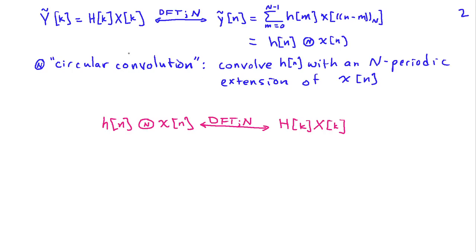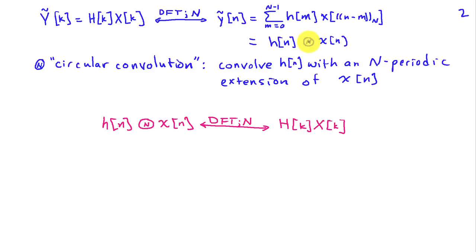So y-tilde in the frequency domain, being the product of DFT coefficients H(k) and X(k), has inverse DFT y-tilde of n given by a convolution of h of m with the periodic version of x of n. We're going to denote this using a different symbol than we've used for convolution before, because this is a slightly different form. We'll put a circle with a capital N in the center to denote N-periodic convolution, also known as circular convolution.